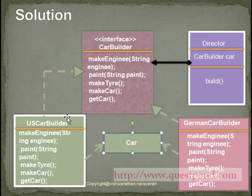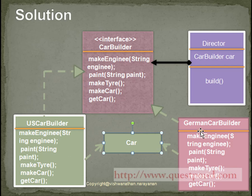The car object will be generated using USCarBuilder and GermanCarBuilder. If the client directly accesses USCarBuilder and GermanCarBuilder, the client has to call all the methods responsible for creating the sub-components for a car. This will be a problem since the client has to know all the methods present within the car builder classes. In order to isolate the client from this, we create an intermediate class called the Director. The Director class holds a reference of type CarBuilder and has a build function.